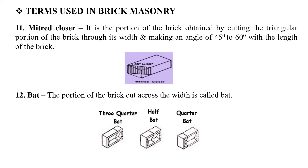The next closer is obtained by cutting the triangular portion of a brick through its width, making an angle of 45 to 60 degrees with the length of the brick. We have a cut at 45 to 60 degrees in the structure, through the middle of the brick.